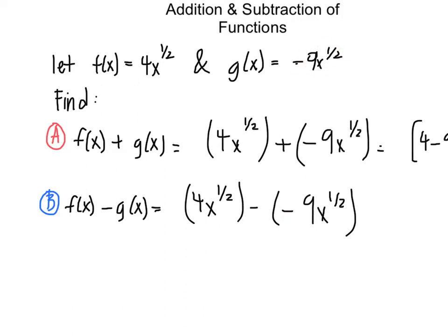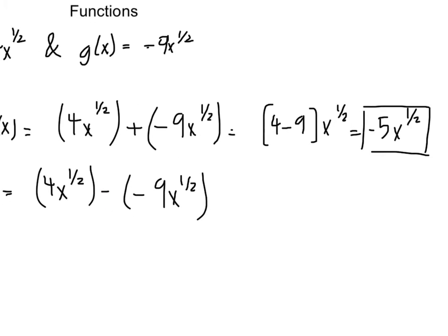So we are plugging in our equations exactly. Remembering that we need to keep our negative sign with g of x even though we are subtracting. So simplify this. We get 4 minus negative 9x to the 1 half, so 13x to the 1 half.